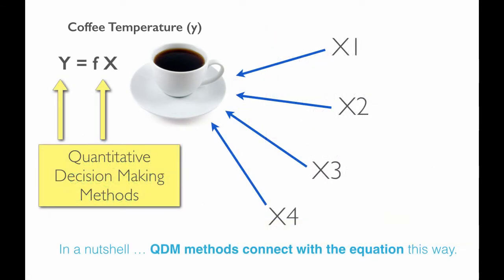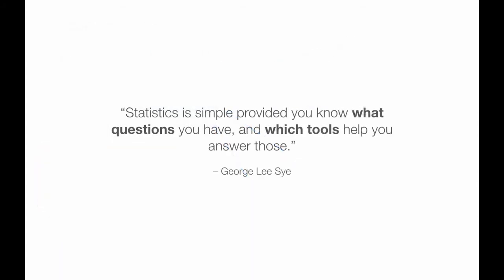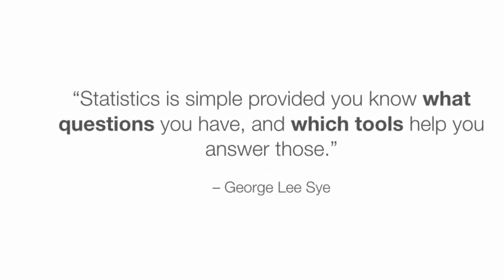So in a nutshell, QDM methods connect with the equation Y as a function of X in this way: some tools look at the Y and some tools look at the relationship between the X's and that Y. All we need to understand is the different types of X's in order to determine which tools to use. Statistics is simple provided you know what questions you have and which tools help you answer those.